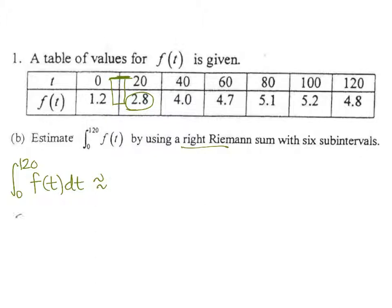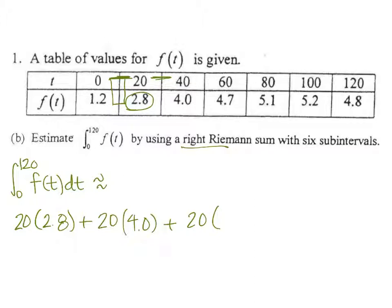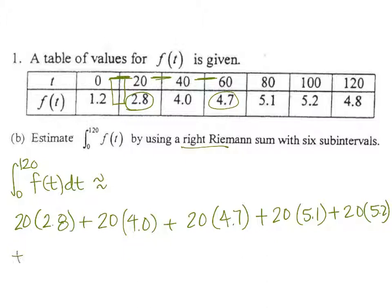So our estimate has width 20 times 2.8, plus 20 times 4.0, plus 20 times 4.7, and we continue through to the very last point, plus 20 times 4.8. When you number crunch all of that, you should end up with a sum of 532.